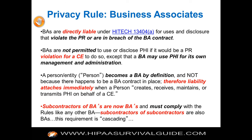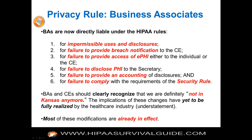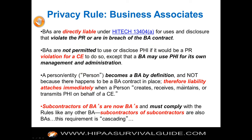A business associate may use PHI for its own management and administration — that's a common sense provision, because if it couldn't, it probably couldn't perform the business function the CE contracted for. A person or entity becomes a BA by definition, by operation of law. Therefore liability attaches immediately, and it's not going to wait on whether or not you have a contract.